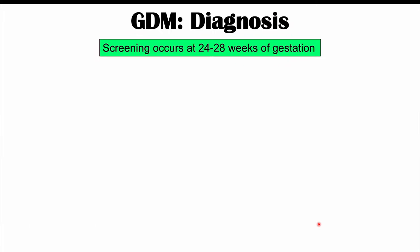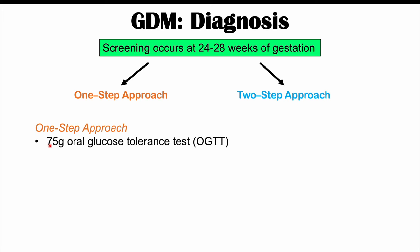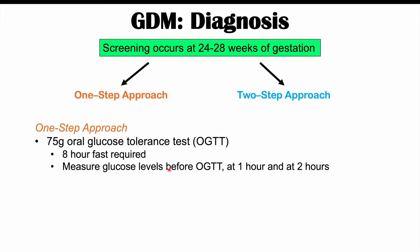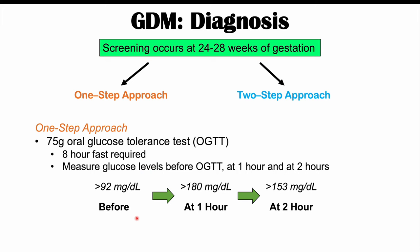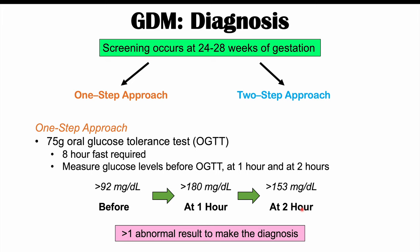Gestational diabetes is screened between 24 to 28 weeks of gestation. There are two approaches. The one-step approach uses a 75-gram oral glucose tolerance test requiring eight hours of fasting, measuring glucose at baseline, one hour, and two hours. A diagnosis is made if any single result is abnormal: fasting greater than 92 mg/dL, one-hour greater than 180 mg/dL, or two-hour greater than 153 mg/dL.